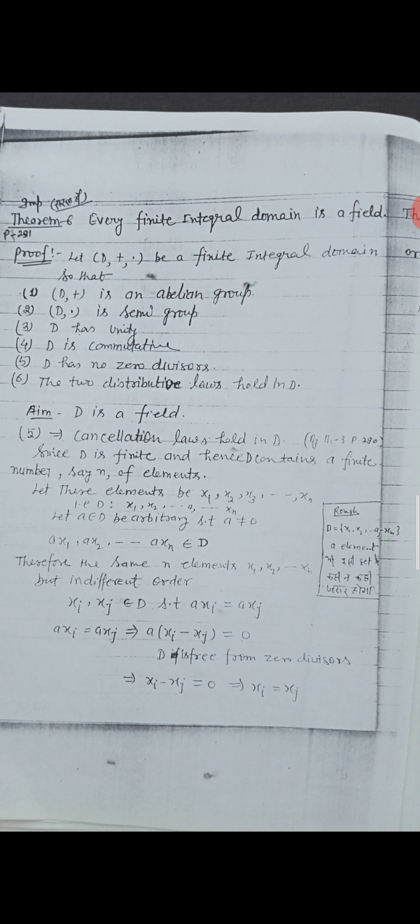That is, D = {x1, x2, x3, ..., xn}. Let a belong to D be arbitrary such that a is not zero. Then ax1, ax2, ax3, ..., axn also belongs to D.